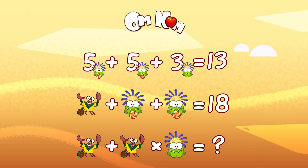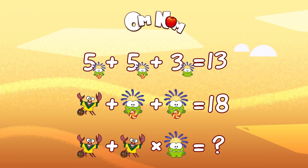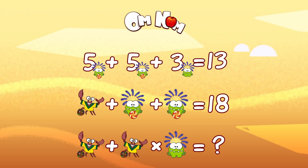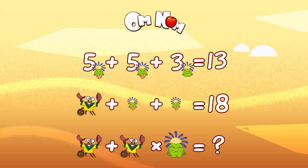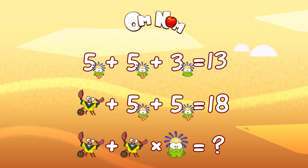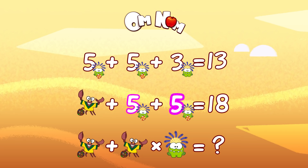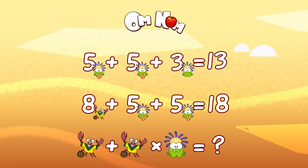Let's go to the second line. Look, it's our old friend — a little crab! Do you remember them playing football? That was hilarious. Okay, so two Om Noms with candy again — we already know that Om Nom with candy stands for five. So it's gonna be crab plus five plus five equals 18. Five plus five is 10, and 18 minus 10 equals 8, so our little crab is 8.